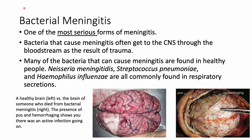Bacterial meningitis is one of the most serious forms of meningitis — more serious than viral meningitis. Most commonly, bacteria cause meningitis by reaching the central nervous system through the bloodstream as a result of some kind of trauma. Many of the bacteria that can cause meningitis are found in healthy people, making this an opportunistic infection. Examples include Neisseria meningitidis, Streptococcus pneumoniae, and Haemophilus influenzae, all commonly found in respiratory secretions and part of normal microbiota.